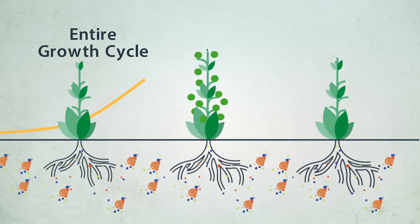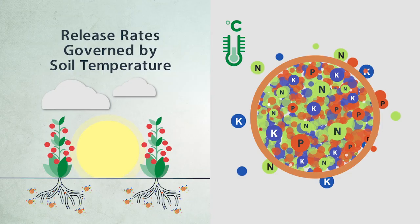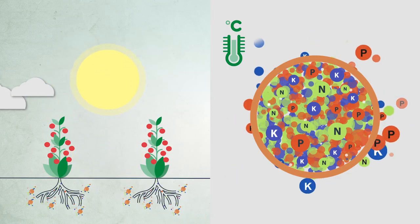This can be from 2 up to 16 months, with release rates governed by soil temperature. Nutrient availability exactly matches growth needs.